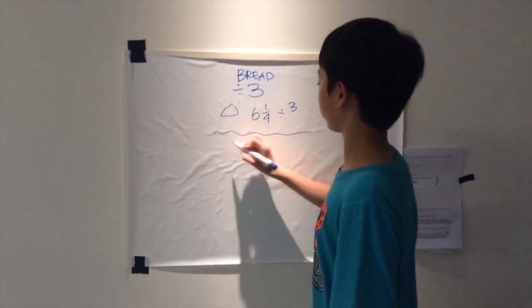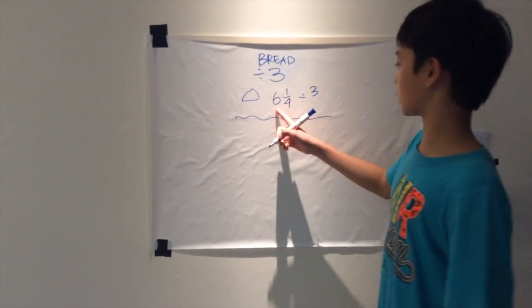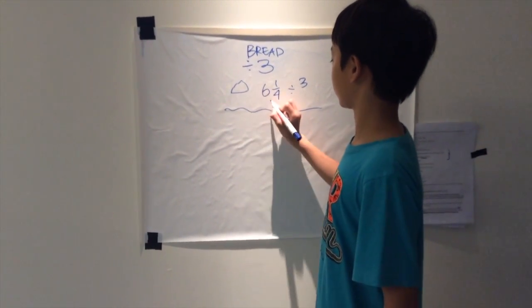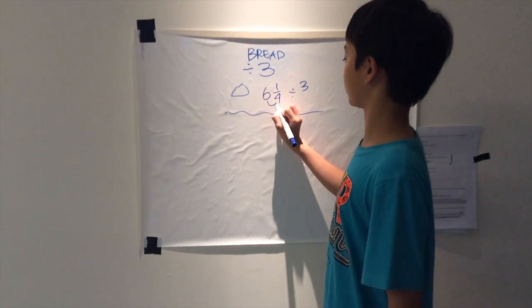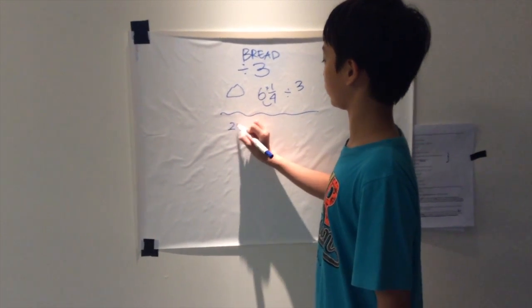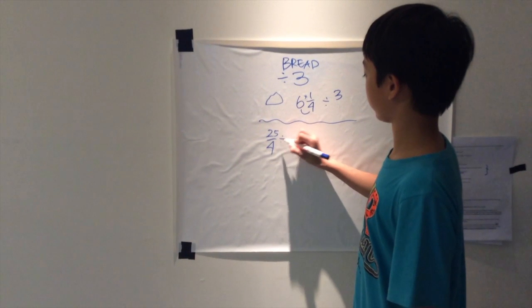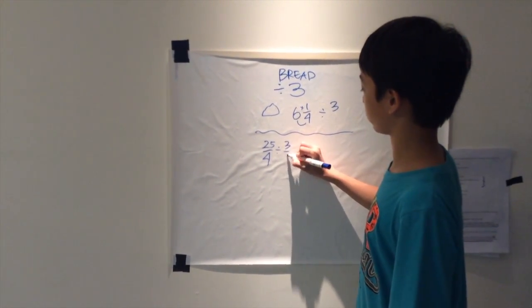In order to do this, we have to make the six and one-fourth into an improper fraction. As again, you can see here, times this and plus this. And so you get twenty-five over four. And you divide it by three over one. It's the same thing as three. But then if you divide, you have to flip these two.